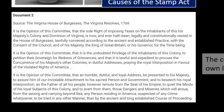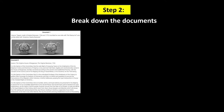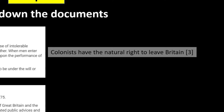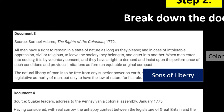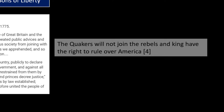For Document 2, the colonies want to be British but they want to make their own laws. In Document 3, colonists have the right to leave Britain. I see Samuel Adams as a source, so I'm going to use his support of the Sons of Liberty as the point of view of the document. In Document 4, Quakers will argue the opposite of what Adams did — my quick sentence says the Quakers will not join the rebels, and the king has a right to rule over America.